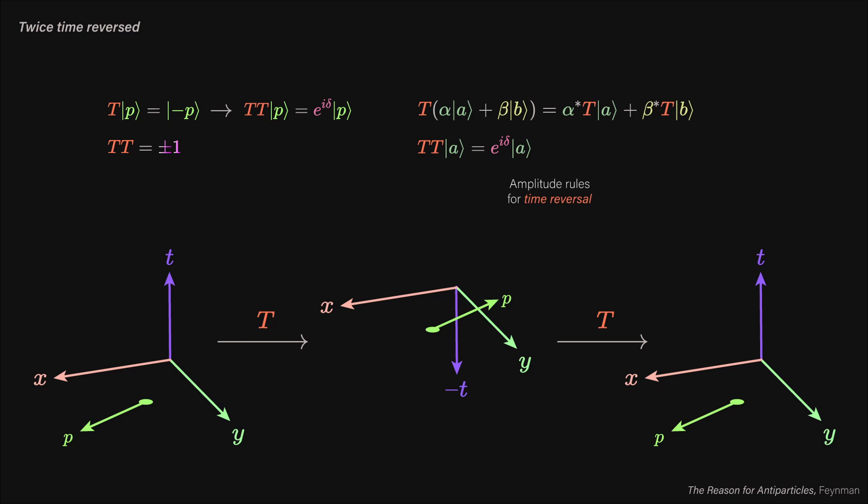Let our momentum state p be time reversed. This now yields -p, because the particle is traveling in the opposite direction with the reverse velocity. Now, let our momentum be again time reversed. This is not p again, but rather it is p times a phase factor. We know that our quantum state has a probability amplitude associated to it, which is a complex number.